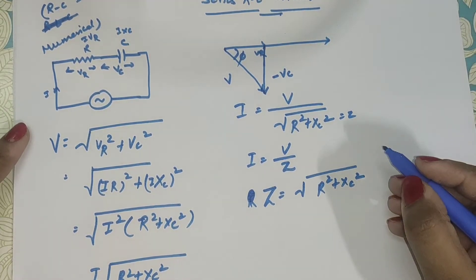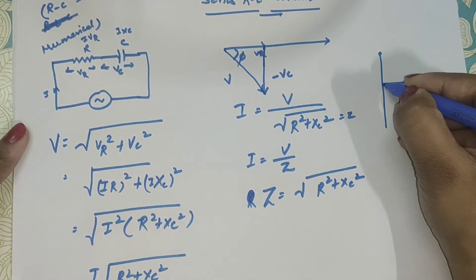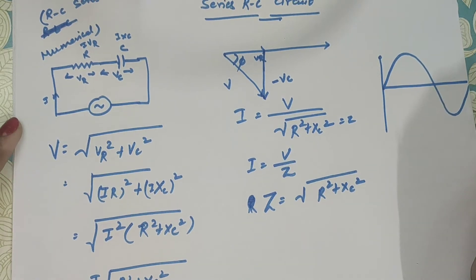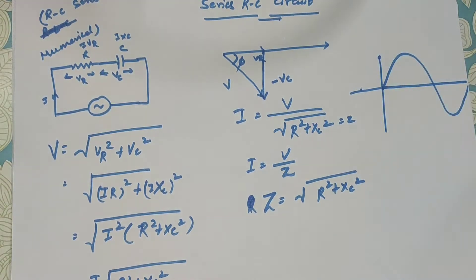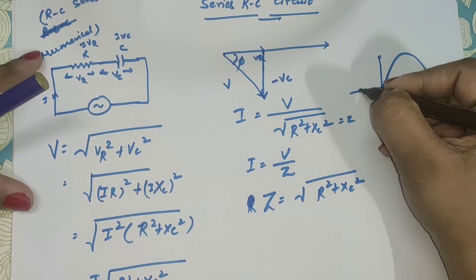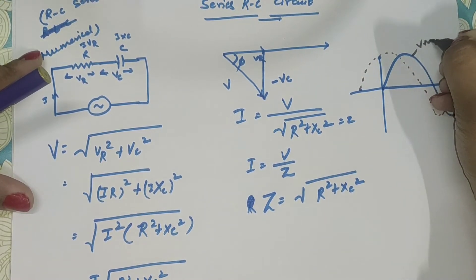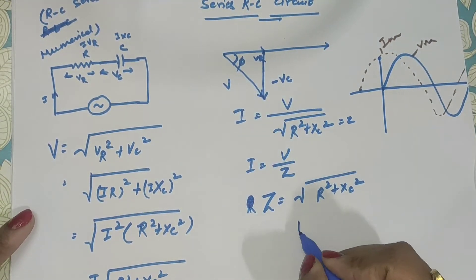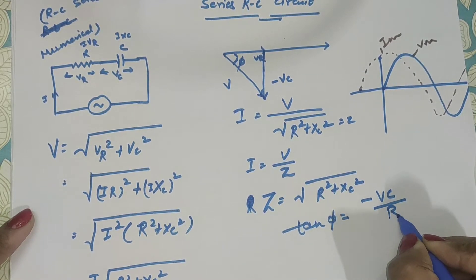If you make the phasor diagram, VC is here, V is here — and I will be leading with respect to V. This is your Vm and this is your Im, maximum current and maximum voltage. If you want to know the phi angle, tan phi equals minus VC upon VR.